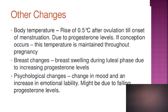There are other changes during the menstrual cycle. Body temperature rises by 0.5 degrees Celsius after ovulation until the onset of menstruation, due to high progesterone levels. If conception occurs, this temperature elevation is maintained throughout the pregnancy, so some women may feel feverish in early pregnancy. There is also breast tenderness and swelling during the luteal phase due to increased progesterone. Psychological changes such as mood changes and increased emotional lability may occur due to falling progesterone levels.